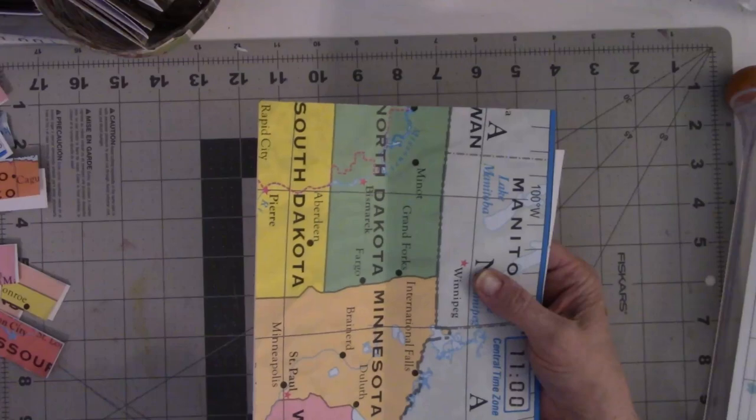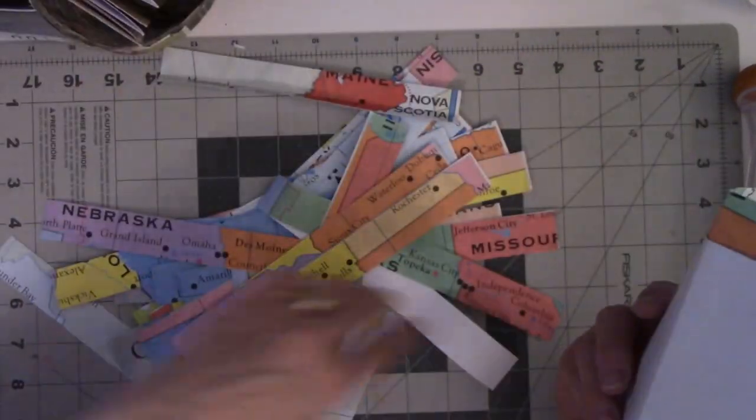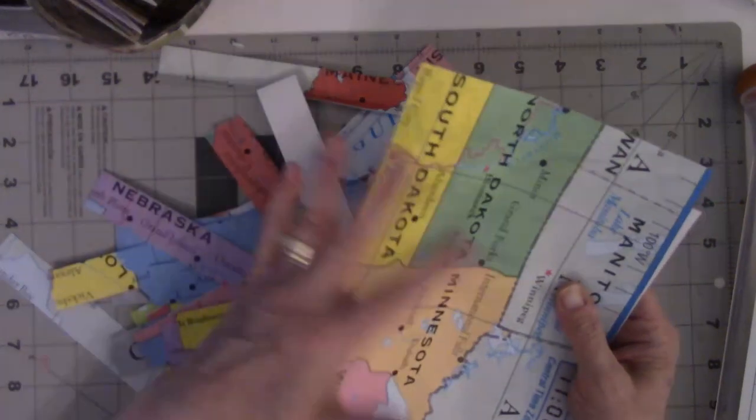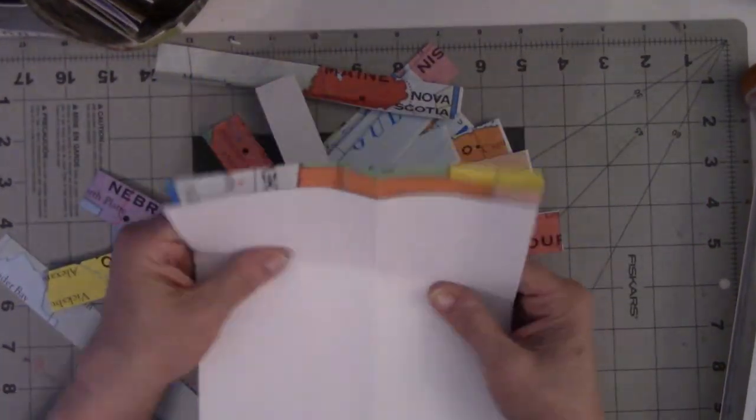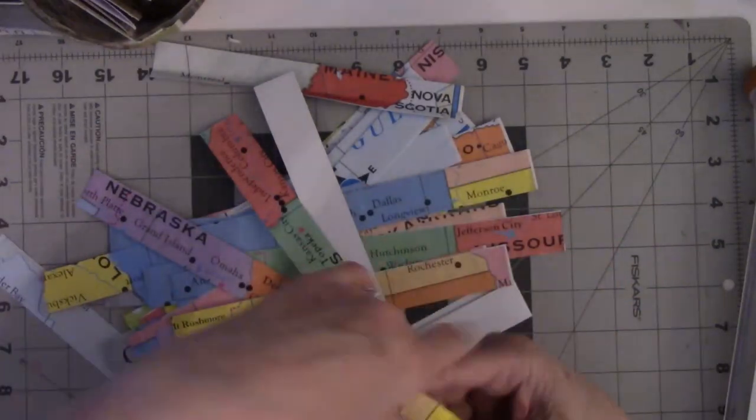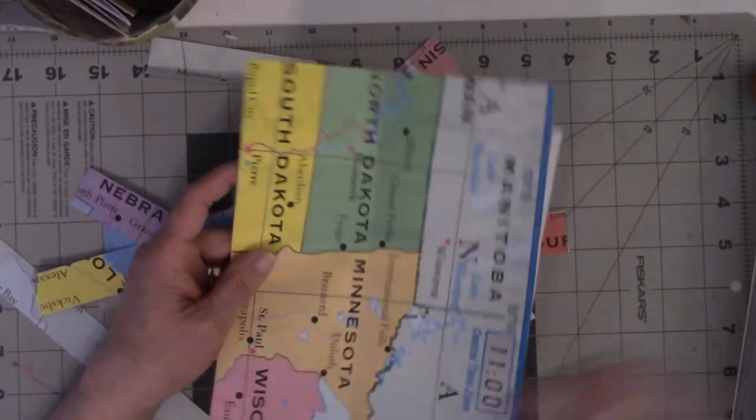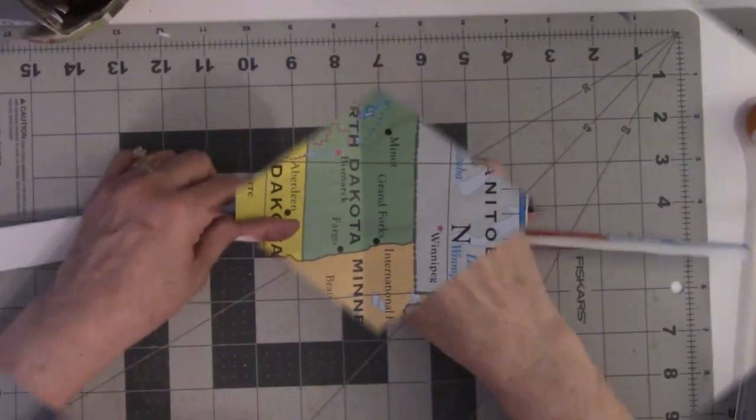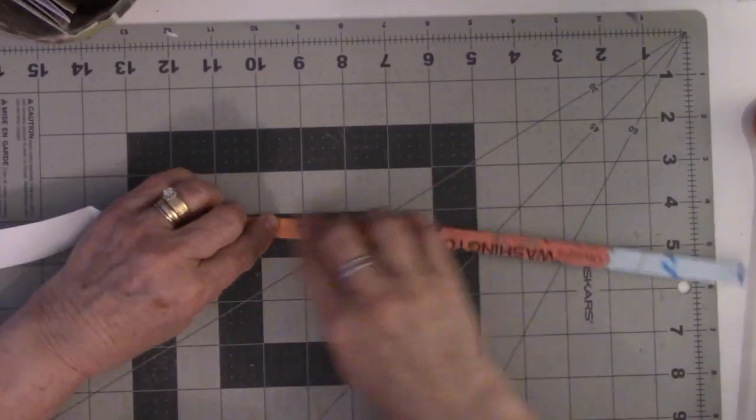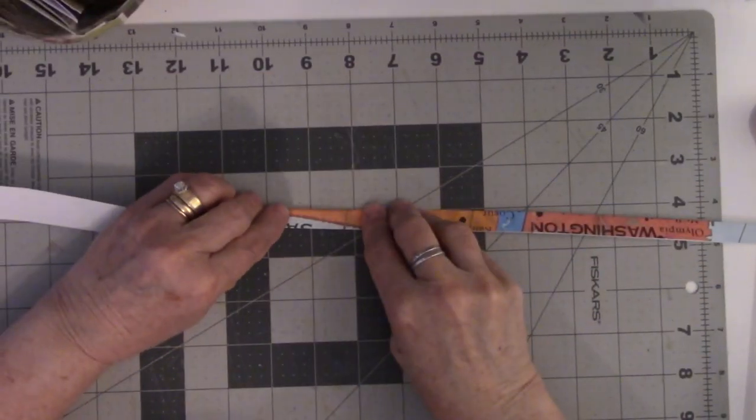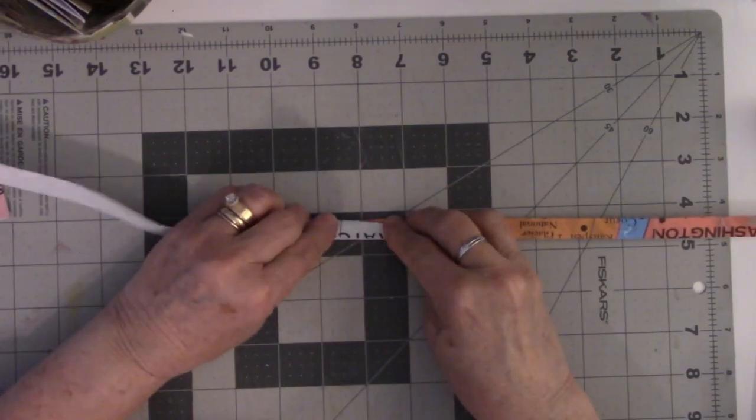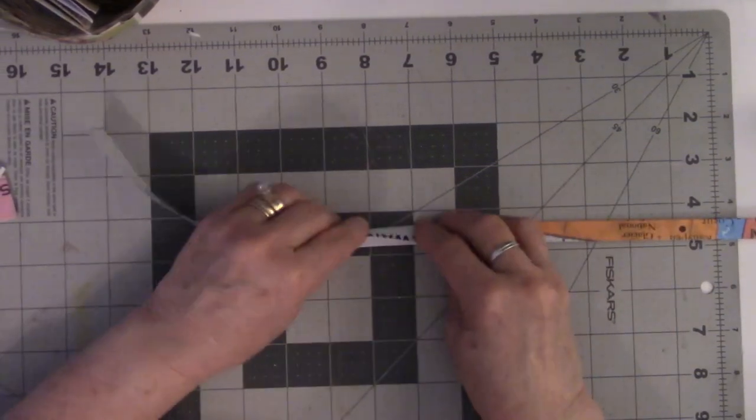So I bought a United States map and I cut the white edging off of it. I folded it up, cut it in sections, and now I've been cutting one inch strips which I will show you next what I will do with it. Some of the strips are longer than others but they're all going to be used the same way.